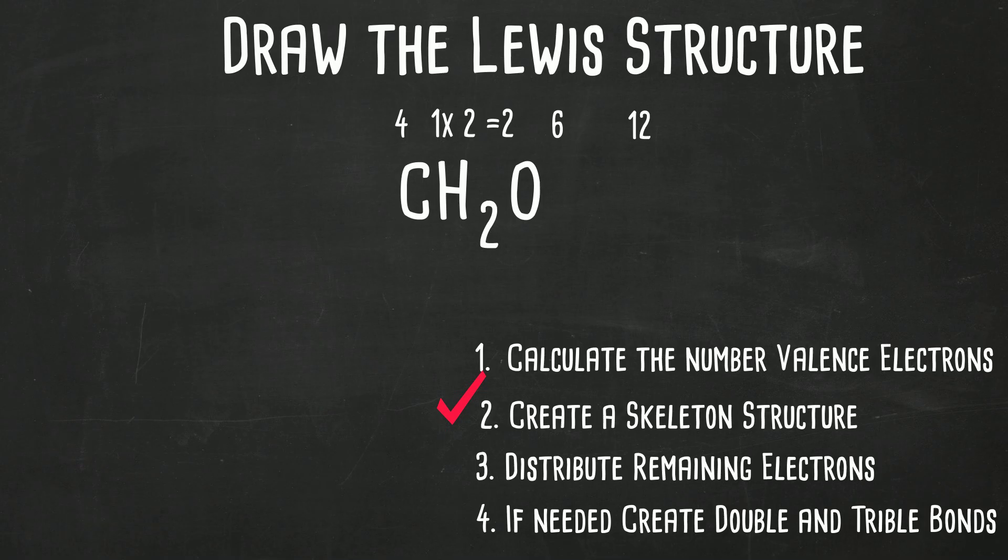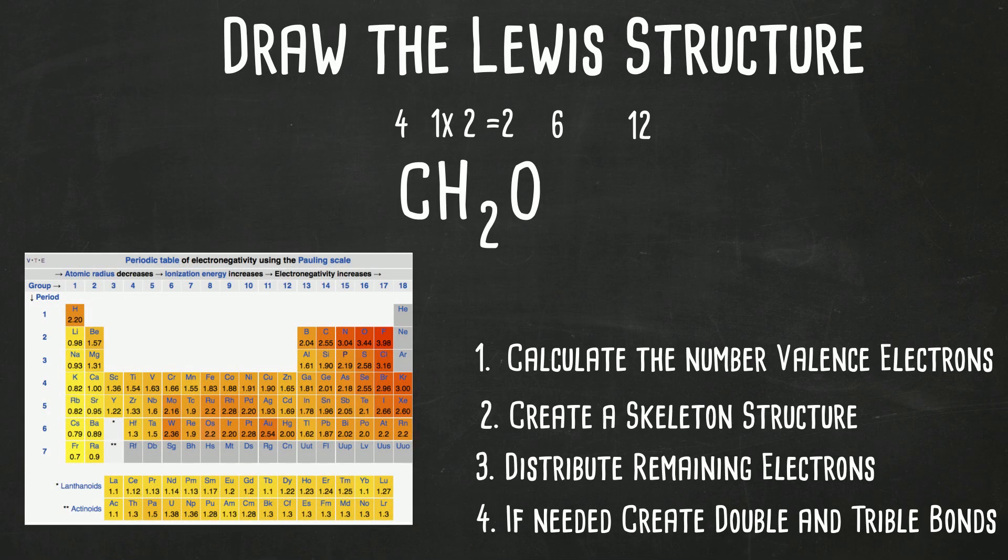Now, which element will go in the center? Remember, hydrogen is always on the outside. Carbon, if you look at a chart of electronegativity, is less electronegative than oxygen. Also, this shortcut, remember you can see which one is closer or further away from fluorine. And so carbon goes in the middle.